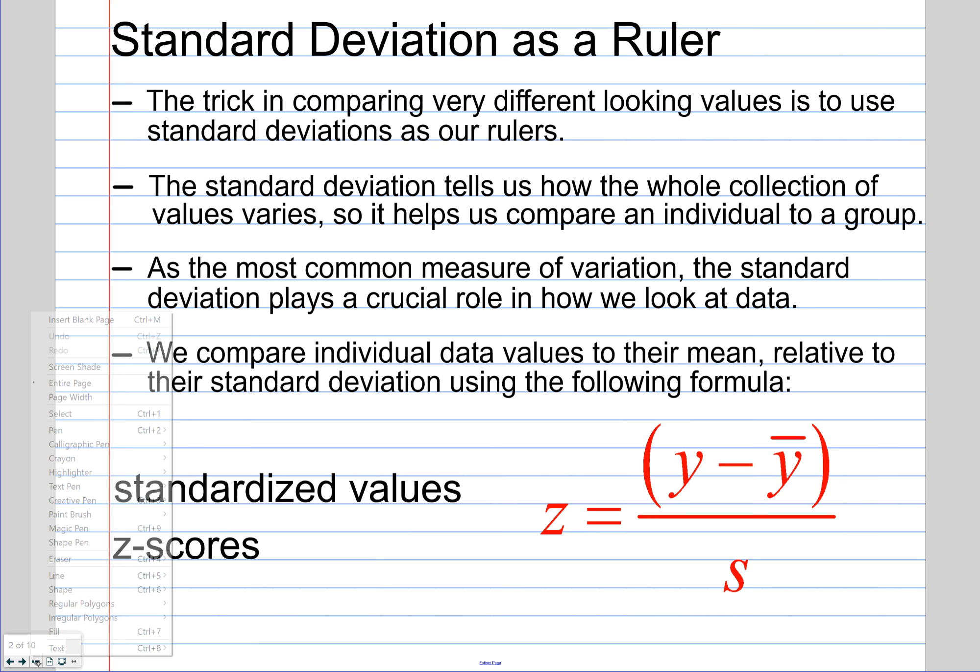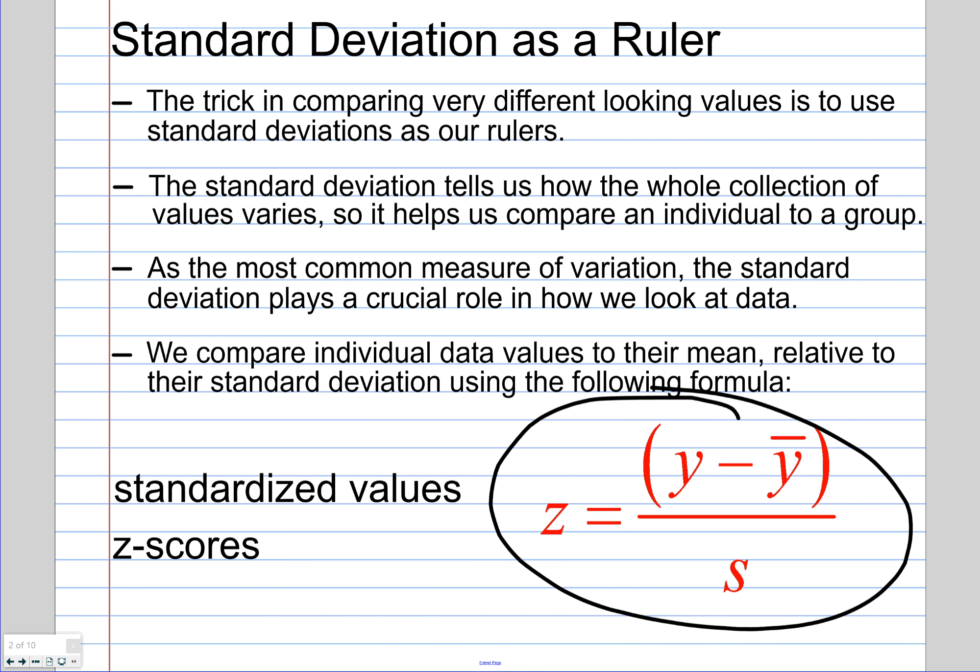So the formula I want you to see here, I put here on your paper, this is the formula we're going to use in the examples today where Z is your standardized Z-score. It's equal to your data value, whatever your data value is, Y, minus Y bar. That's the mean. And S is your standard deviation. So we're going to subtract the mean and divide by the standard deviation.